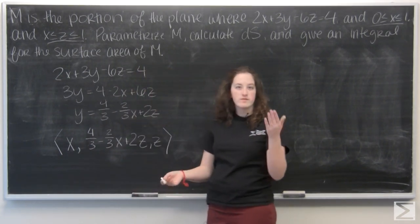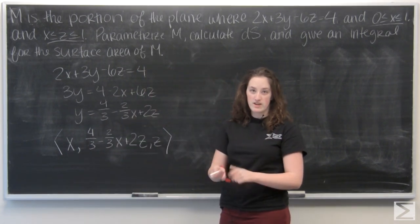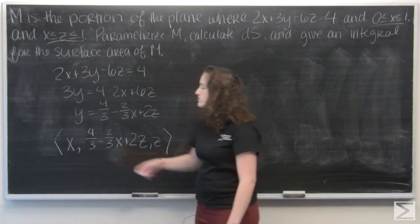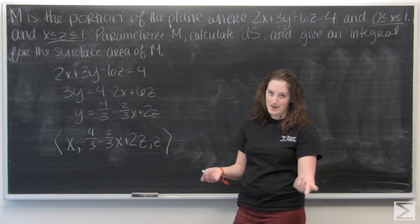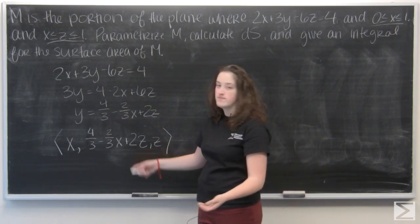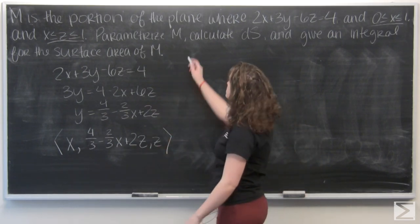So I have one function for each variable, x, y, and z. And then I've just rewritten z as a function of x and z. So the first part of the question is done.